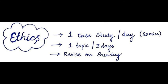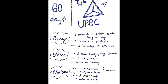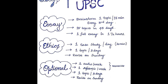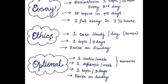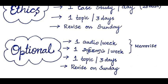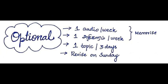Simultaneously, you should also focus upon the preparation of Section A of the ethics paper. You can do this by selecting a topic and reading it continuously for 3 days, and keeping Sundays for revision. Please go through the detailed video on ethics where I explain the syllabus and the detailed strategy for preparation. Now let's move forward to the next limb — the optional subject. As with the ethics preparation, you can also allot one topic for 3 days and use Sundays for revision.